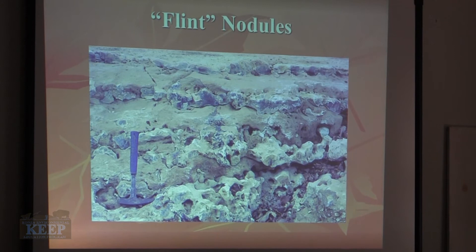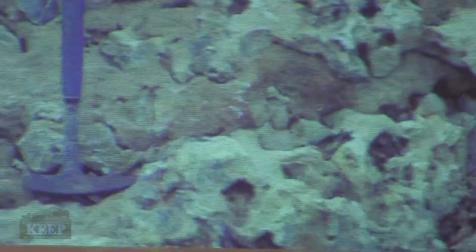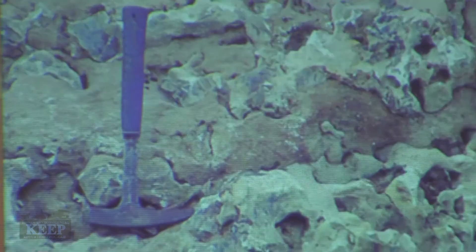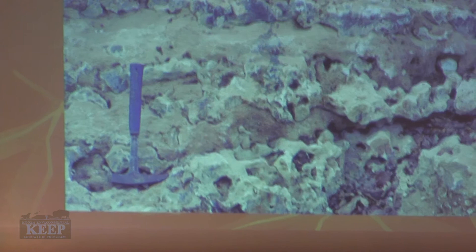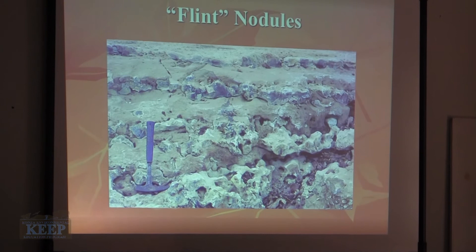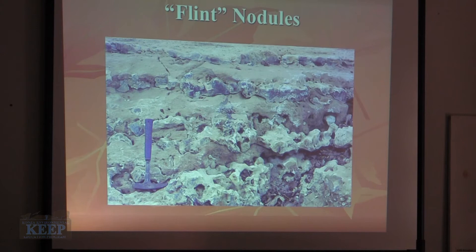These are the flint nodules. The reason this is called the Flint Hills. These are flint and chert — flint and chert are the same thing. Flint is a microcrystalline quartz, which is silica. It's the same thing that makes glass — they take sand, melt it down, pour it out, freeze it, and that's window glass. So flint has the same chemical composition as window glass.